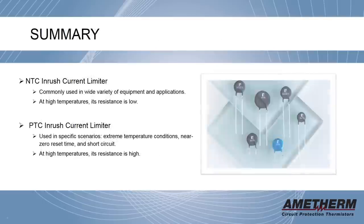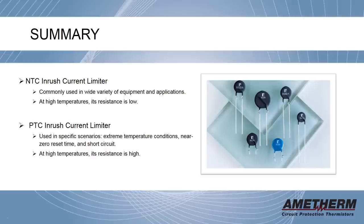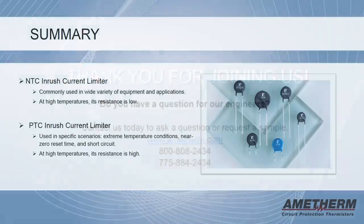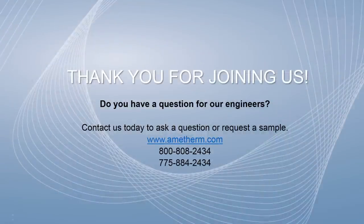In conclusion, an NTC inrush current limiter is commonly used in a wide variety of equipment and applications. At high temperatures, its resistance is low. On the other hand, a PTC inrush current limiter is used in specific scenarios such as extreme temperature conditions, near zero reset time, and to prevent short circuits. At high temperatures, its resistance is high. Thank you for joining AmiTherm for today's presentation on improving inrush current protection. For questions or to request a sample, please visit our website at www.amotherm.com.